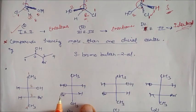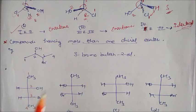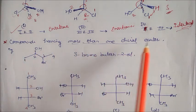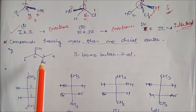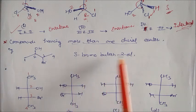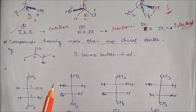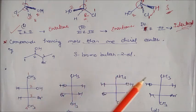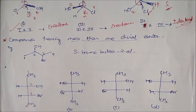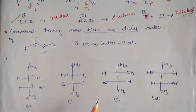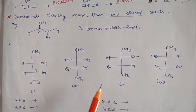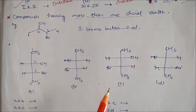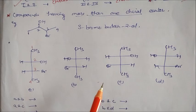The compound containing more than one chiral center — for example, 3-bromobutane-1,2-diol. Let us see how we can identify their enantiomers, diastereomers, and identical isomers. It has four stereoisomers, and in these four stereoisomers we have to identify and tell their answers.